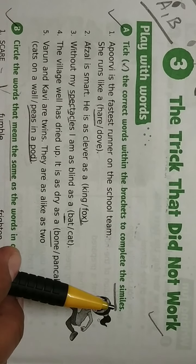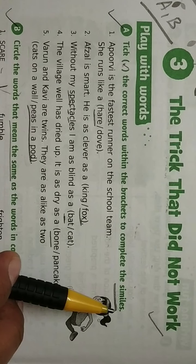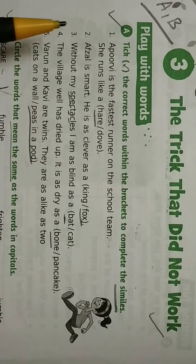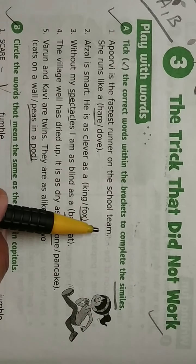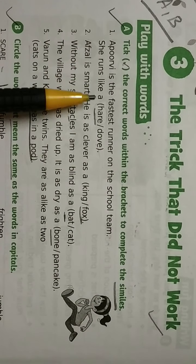similes is a word that compares two things. For example, as white as snow, as black as coal. First one: Apoorvi is the fastest runner on the school team. She runs like a hare.